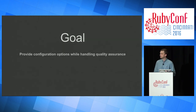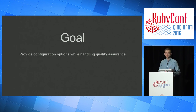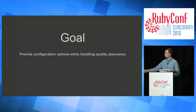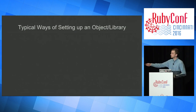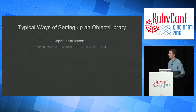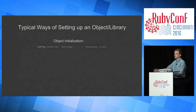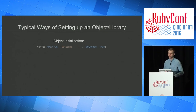One way we can approach this is through configurations. We want to be able to provide configuration options while handling quality assurance. One way you can do this is a singleton — every time a user interacts with an object, it will have a global effect versus a very localized mess. A typical way to set up an object is config.new — very explicit, very simple, very obvious. You pass in five values. But five values is quite a lot to remember, and it could be even more depending on the options you provide. As a user, I don't want to flip back and forth between documentation every time.